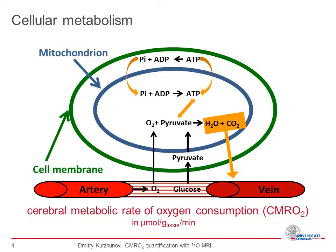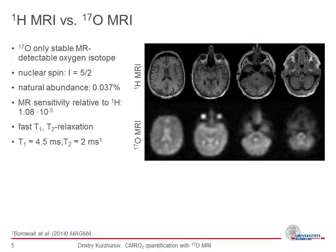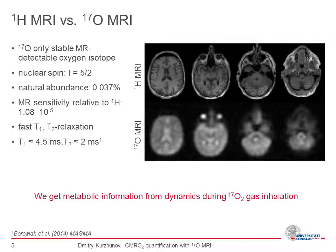There are several isotopes of oxygen, but oxygen-17 is the only stable and MRI-detectable oxygen isotope. It has a nuclear spin of 5/2 and very low natural abundance of about 0.037%. This means the MRI sensitivity is 100,000 times lower compared to protons, and it has fast T1 and T2* relaxation of about 2 milliseconds. The proton MRI image provides anatomical information, whereas the 17-O MRI image does not provide additional anatomical information, but we can get metabolic information from the signal dynamics during 17-O gas inhalation, using 17-O gas as a tracer.